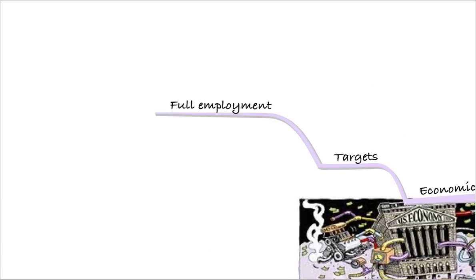The first of those targets is full employment — everyone getting a job. Number one, that keeps people happy so they'll vote the government back in. And number two, it keeps money flowing in the economy. It keeps other people in jobs if everyone else has jobs.